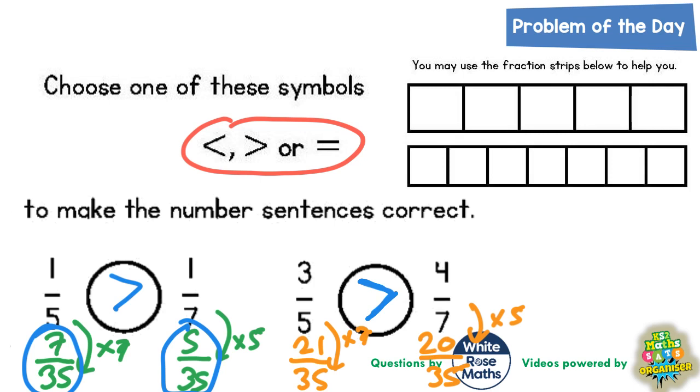The crocodile is hungry, so it wants to eat the bigger thing. So if 21/35 is bigger, the crocodile's mouth points towards the 21/35.